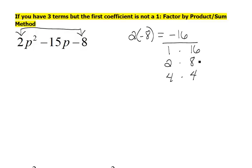Now, one of these combinations is going to give us the middle term, and we need a negative 15. So it looks like 1 and 16 would give us a negative 15 if the 16 was negative and the 1 was positive, because plus 1 minus 16 is negative 15.